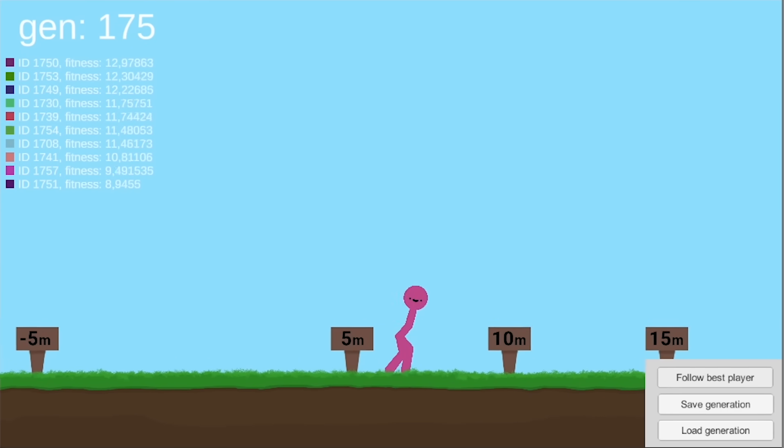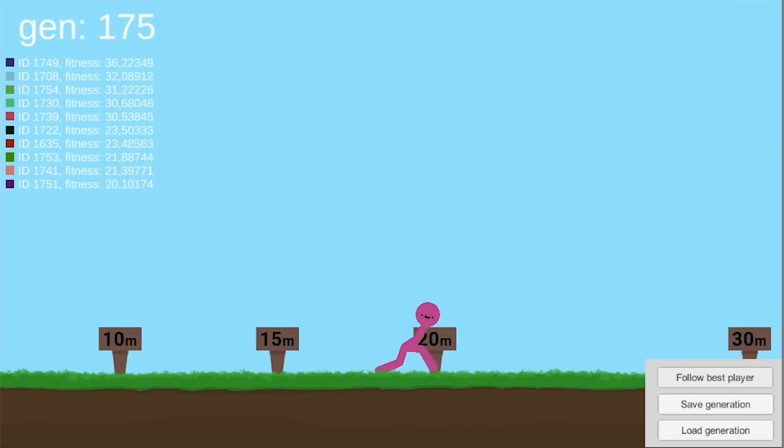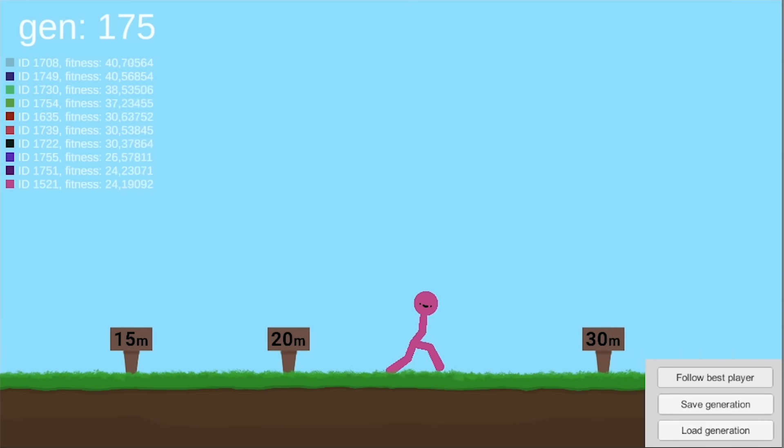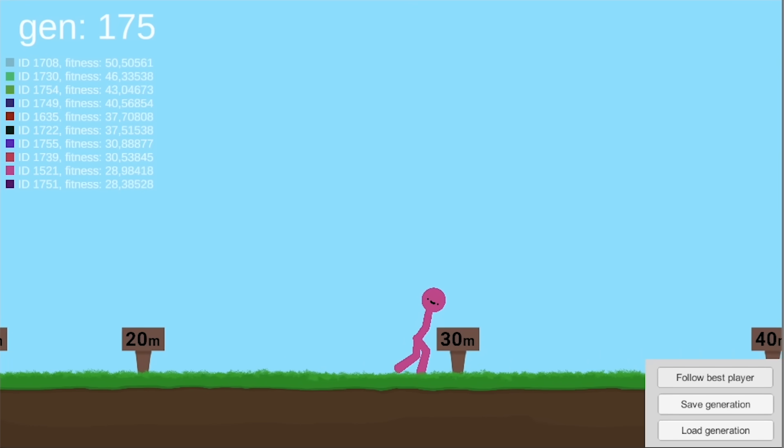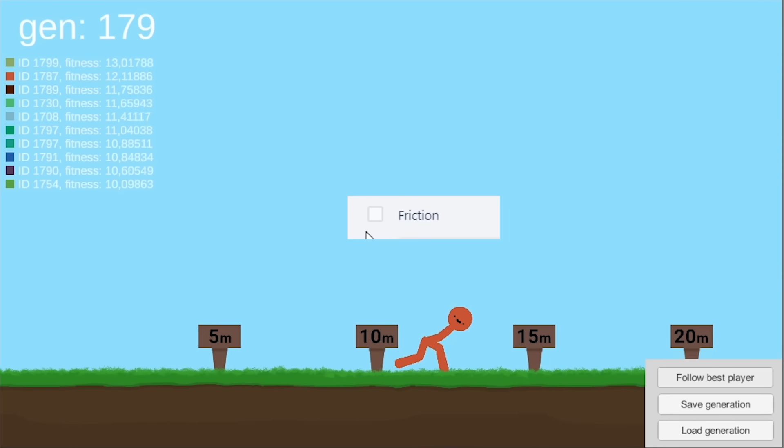So I sped up the simulation even more, and here is the result of generation 175. It's actually pretty good, but it's not really a proper walk or run because he's just kind of sliding his legs across the floor. The reason this is possible is because there is no friction on his feet, so let's make it more realistic for Billy and activate proper realistic friction.